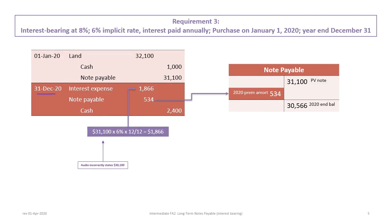The next entry is at December 31st, 2020. We set it up with a debit to interest expense, a debit to note payable for premium amortization, and a credit to cash. Cash is $2,400, paid annually. Interest expense is $1,866, based on the original present value of $30,100 times six percent for twelve months. The difference — $2,400 minus $1,866 — equals $534, which is the debit to note payable. The ending balance in note payable is now $30,566.